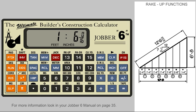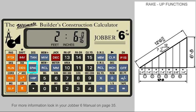Now press the Plus key for the fifth rise dimension. We can even enter another special space using the same procedure. Let's enter a space of 2 feet 6 inches. Again, press the Space key and the Plus key for the sixth rise dimension. Now, unless another special spacing is entered, the calculator will automatically revert back to the default spacing when the Plus key is pressed.